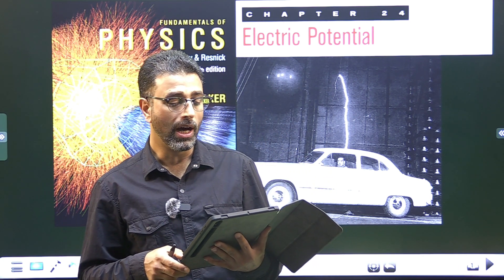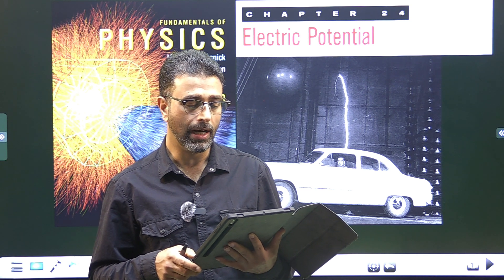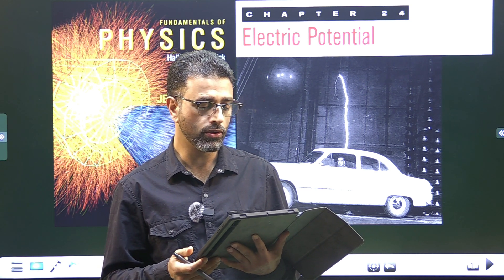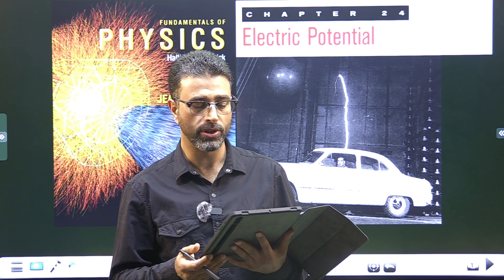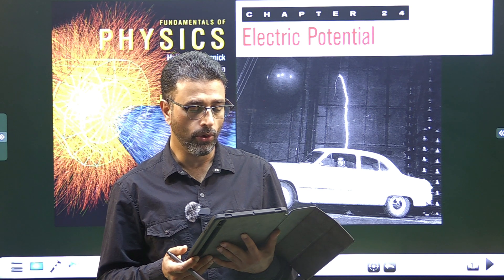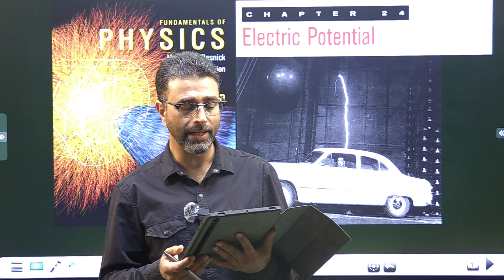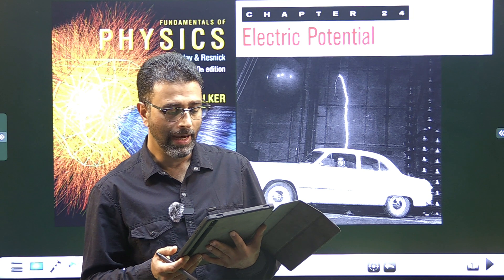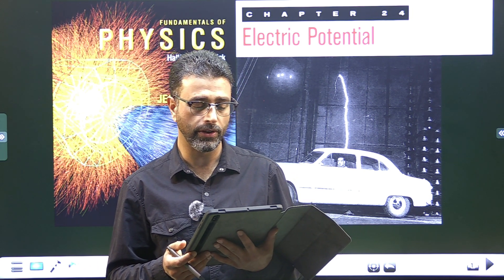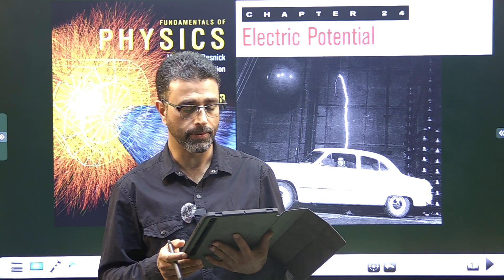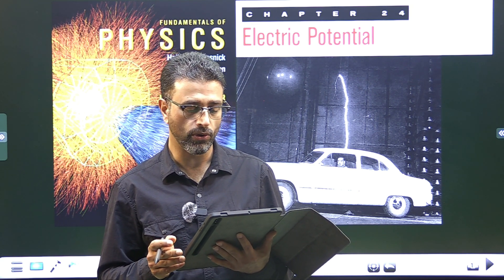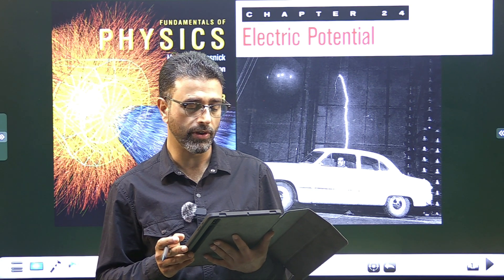Let me read out the problem. Two large parallel conducting plates are 12 centimeters apart and have charges of equal magnitude and opposite signs on their facing surfaces. The electric force of 3.9 × 10⁻¹⁵ newtons acts on an electron placed anywhere between the two plates, neglect fringing. Find the electric field at the position of the electron. What is the potential difference between the plates?